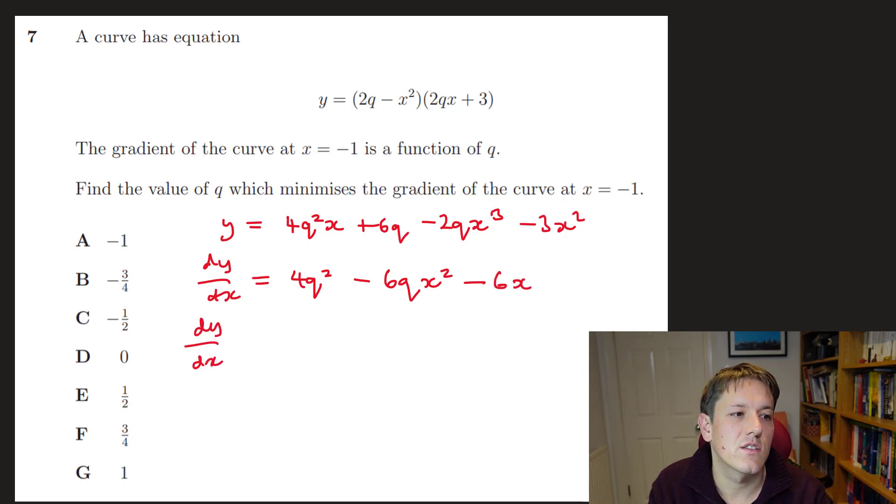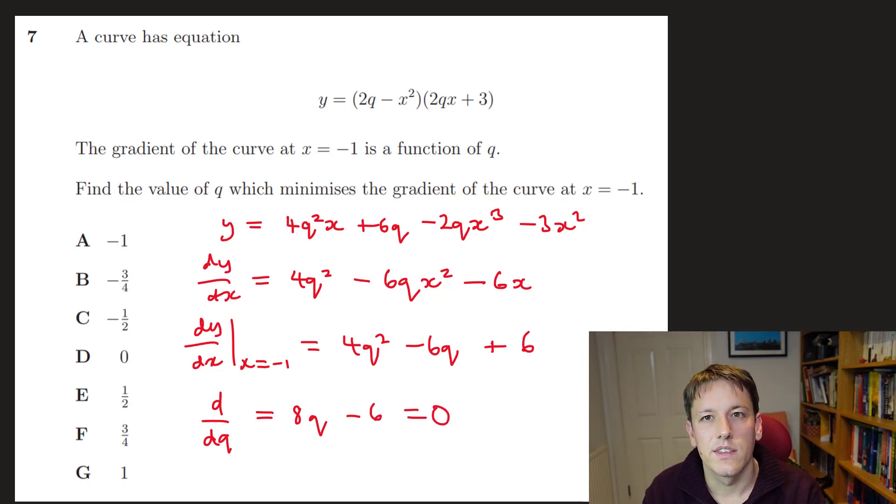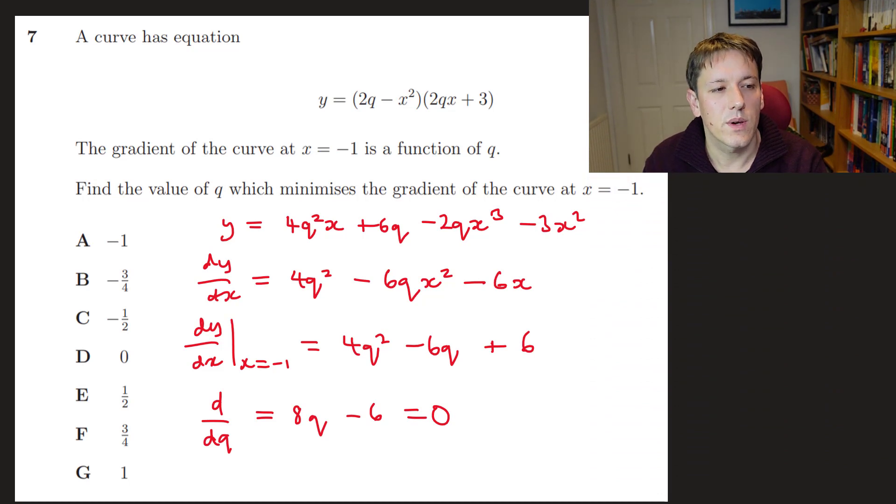OK, so dy by dx when x equals minus 1 is 4Q squared minus 6Q times minus 1 squared, which is 1 plus 6. And we want to minimize this. So, OK, we can complete the square or something. But seeing as we're differentiating, why don't we just differentiate it with respect to Q here and get 8Q minus 6. That's going to have a minimum when the gradient is 0. So 8Q minus 6 equals 0. So 8Q equals 6 and Q equals 6 over 8, which is equal to 3 quarters. And the answer is F.